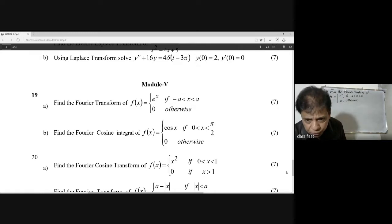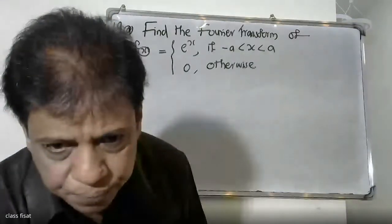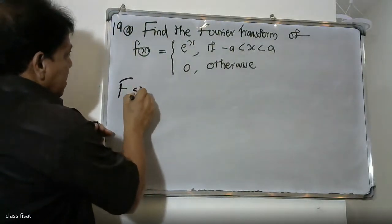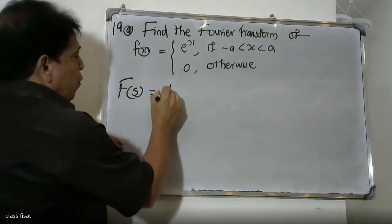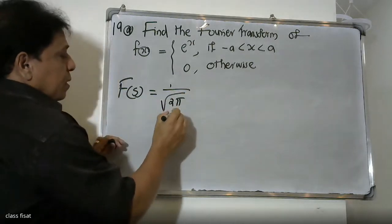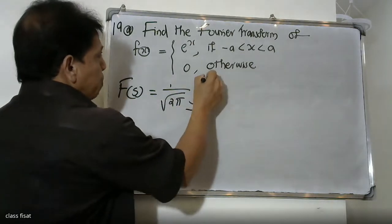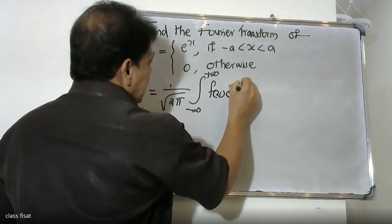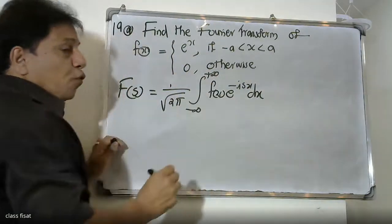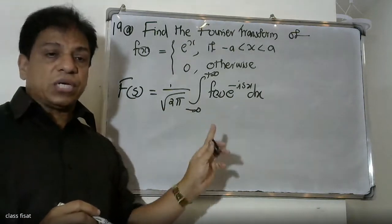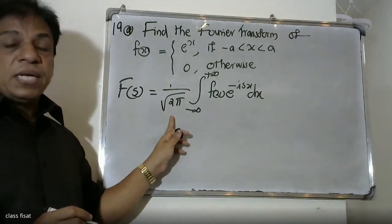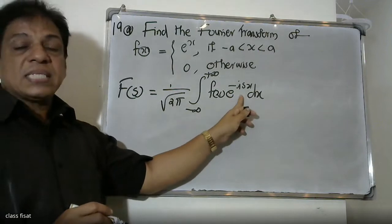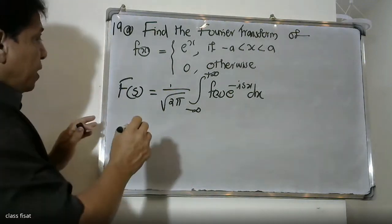The formula for the Fourier transform is F(s) = (1/√2π) times the integral from minus infinity to plus infinity of f(x) e^{-isx} dx. That is the formula we will use for this problem.